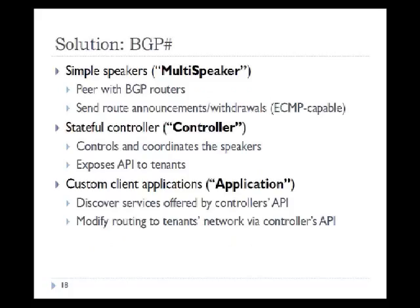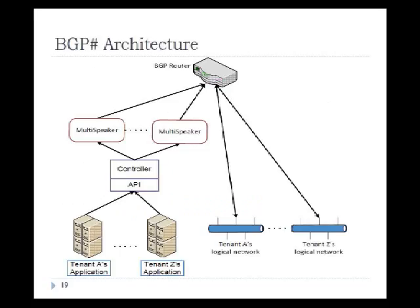The solution we propose is BGP-Sharp, which contains three components. The first is a simple speaker — referred to as multi-speaker — which peers with BGP routers and sends route announcements and withdrawals. A single multi-speaker instance can set up multiple peering sessions with the router, enabling ECMP. The second component is a stateful controller that coordinates the speakers and exposes a public API to tenants. The third is a tenant-client application that discovers services offered by the controller's API and modifies routing via that API. In the architecture, multiple multi-speakers connect to the router, each also connected to the controller, which exposes an API to each tenant's application.